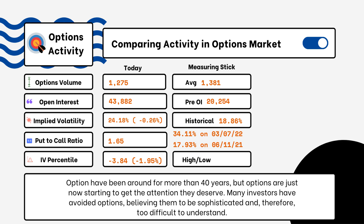We've provided details on today's option activity. What you'll be able to see here is options volume, open interest, implied volatility, put-to-call ratio, and IV percentile. One of the most popular indicators for traders is the put-to-call ratio.